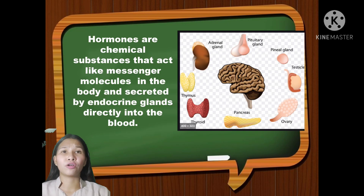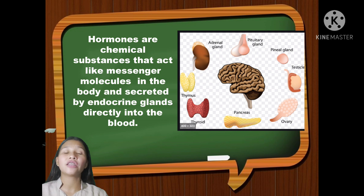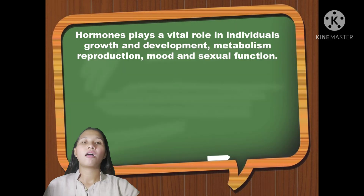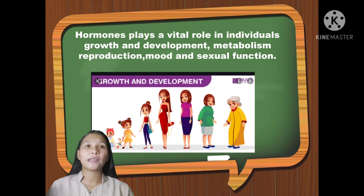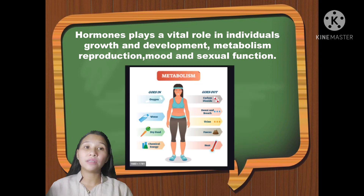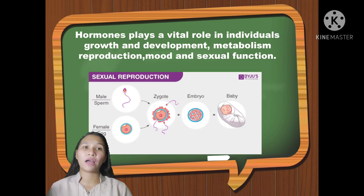What are hormones? Hormones are chemical substances that act like messenger molecules in the body and are secreted by endocrine glands directly into the blood. Hormones play a vital role in individuals' growth and development, metabolism, reproduction, mood, and sexual function.